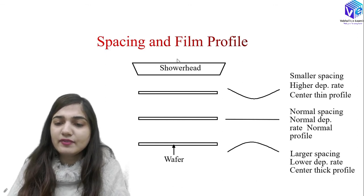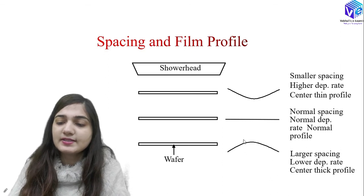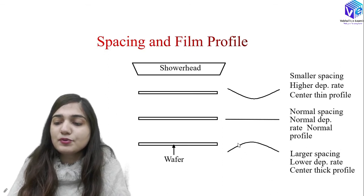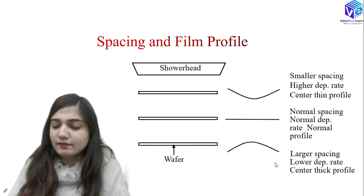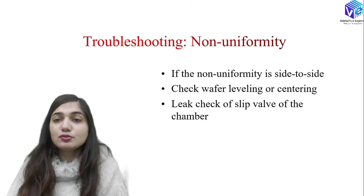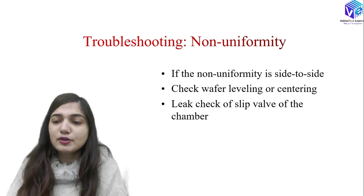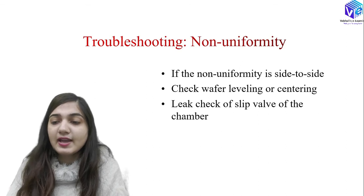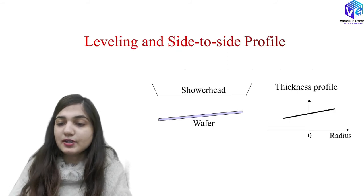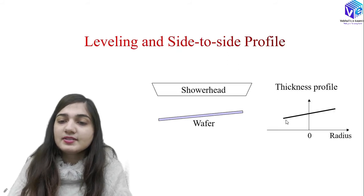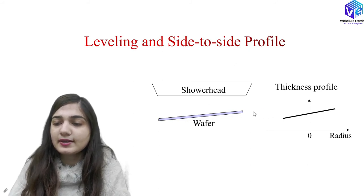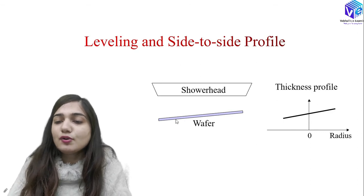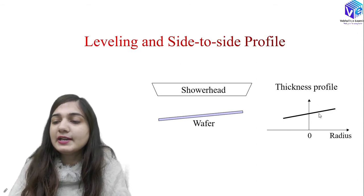Now, troubleshooting of non-uniformity: if the non-uniformity is side to side, we have to check the wafer labeling and centering, and also do a leak check of the slip valve of the chamber. You can see the labeling and the side-to-side profile. By leveling the wafer, you can get better uniformity. If the wafer is tilted, the thickness profile will be tilted as well.